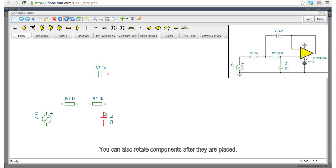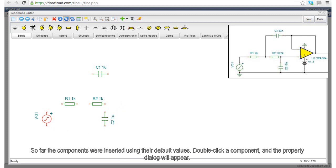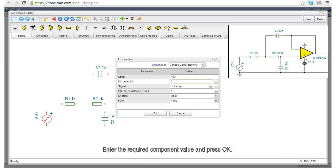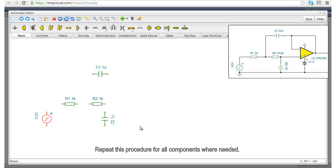You can also rotate components after they are placed. So far, the components were inserted using their default values. Double-click a component and the property dialog will appear. Enter the required component value and press OK. Repeat this procedure for all components where needed.